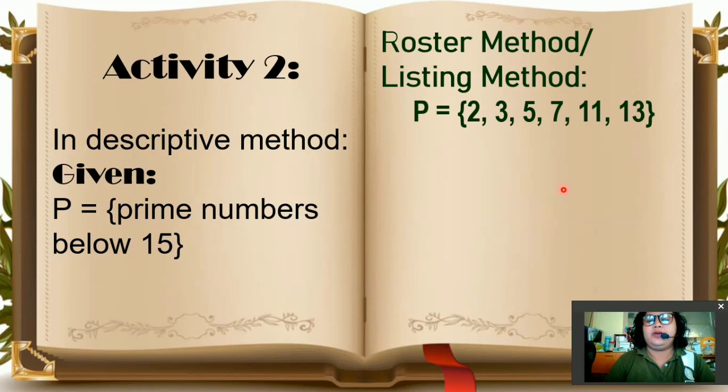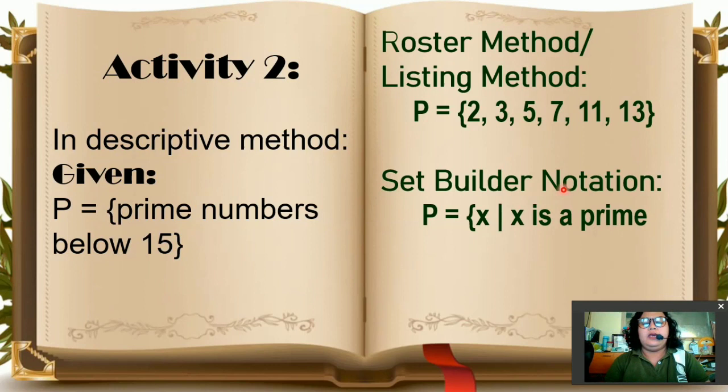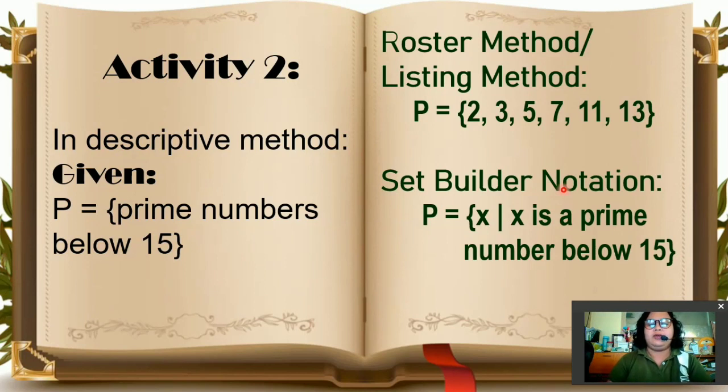So, roster method or listing method. The prime numbers below 15 are 2, 3, 5, 7, 11, and 13. Using set builder notation. So it would be set P equals the set of X such that X is a prime number below 15. Did you get the correct answer? Very good.